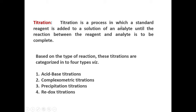Before going to see what is meant by conductometric titrations, I would like to give a brief idea about titration, end point and types of titrations. Titration is a process in which a standard reagent is added to a solution of an analyte until the reaction between the reagent and analyte is complete. The standard reagent is one whose concentration is known to us, and an analyte is one whose concentration is to be determined.